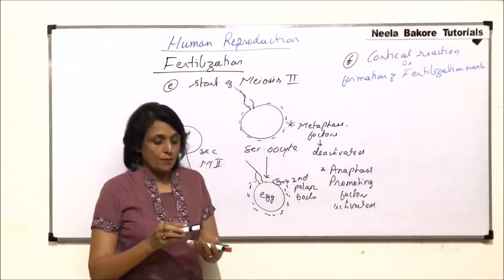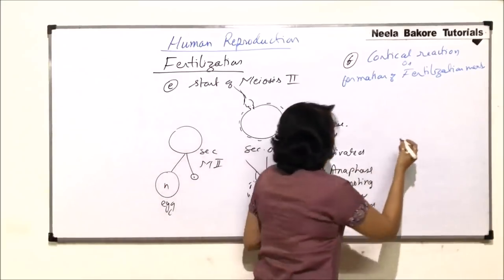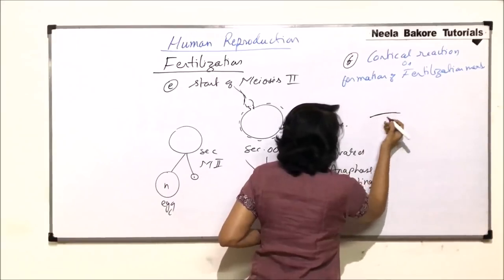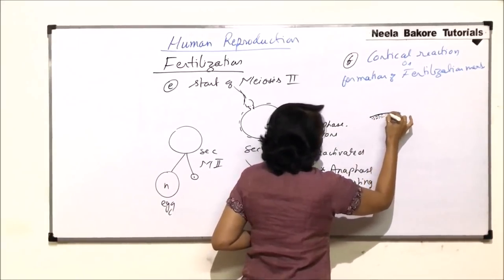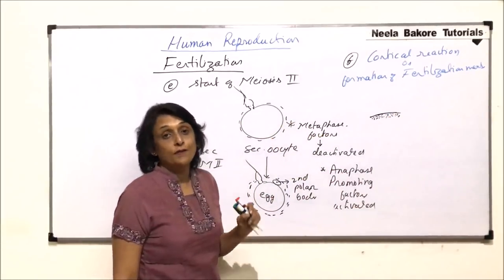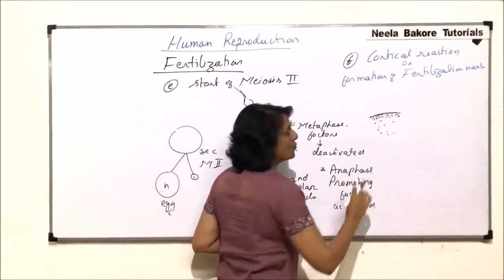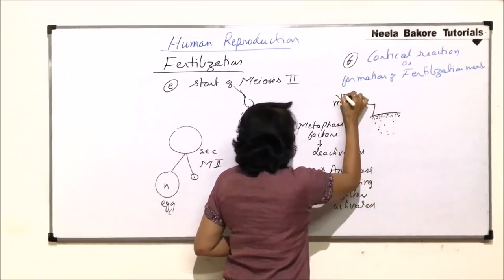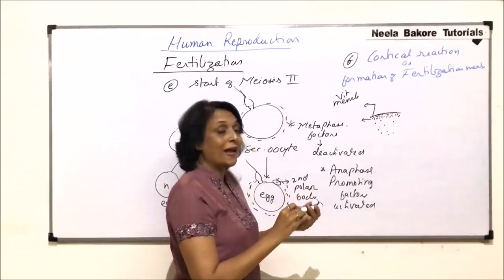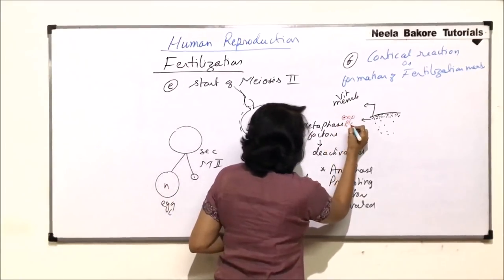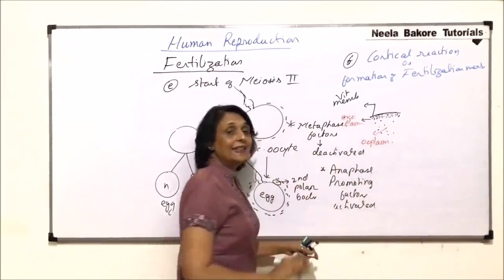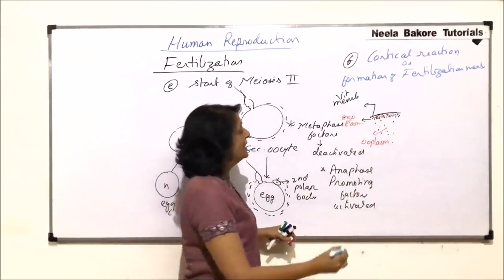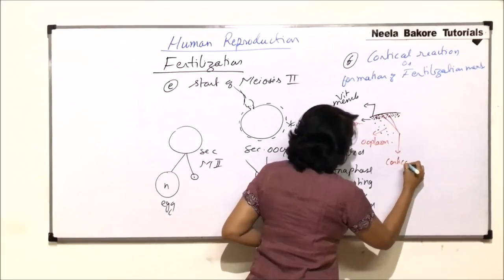Let us see how this membrane is formed. Here is the egg — drawing just the membrane part. Beneath the membrane there is the cytoplasmic content. The outer cytoplasm is known as exoplasm, which is dense, and the inner one is ooplasm. This outer layer is the vitelline membrane, and in the exoplasm are present some granules which make it appear dense — these are called cortical granules.